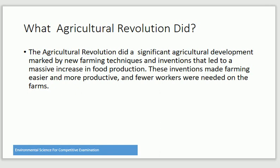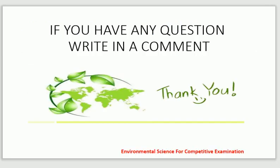The Agriculture Revolution marked a significant agricultural development characterized by new farming techniques and inventions that led to a massive increase in food production. These inventions made farming easier and more productive, and fewer workers were needed on the farms. If you have any questions, write in the comment section — Inshallah I will answer you. Thank you, Allah Hafiz.